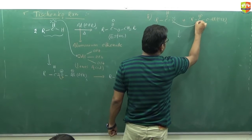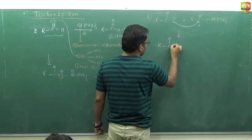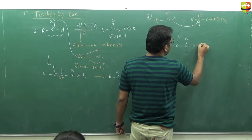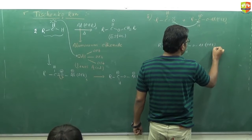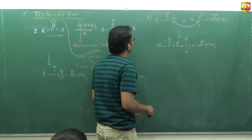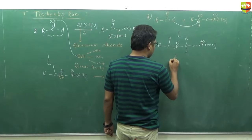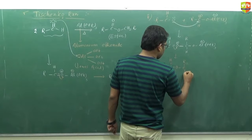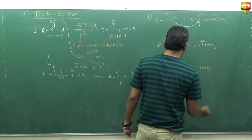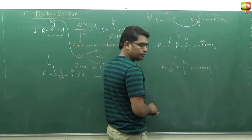So the next step of the reaction is: the lone pair attacks onto this carbon, and this oxygen-carbon bond forms. The product here has RC=O and this O attached to this carbon — RCH·O·Al(OEt) — with negative charge on aluminium and positive charge on the oxygen.